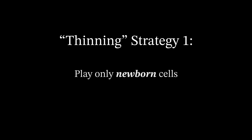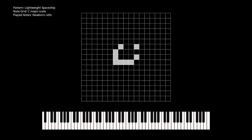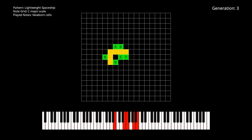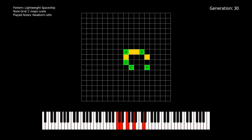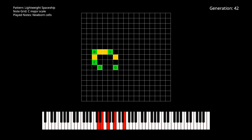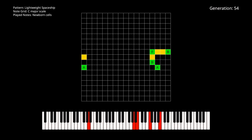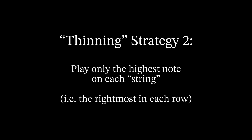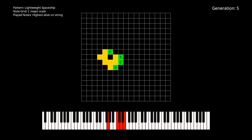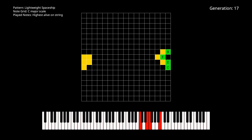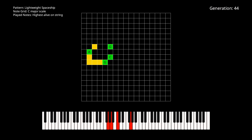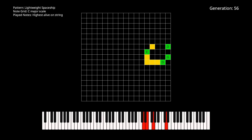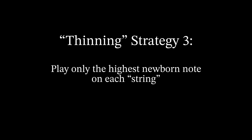To mitigate this, we can play only the newborn cells rather than every single living cell in each generation. This helps space things out, giving more clarity to the results. We can further reduce the number of concurrent notes by only playing the highest note on each string, much like how a physical stringed instrument would behave. We can combine these last two ideas and play only the highest newborn note on each string.